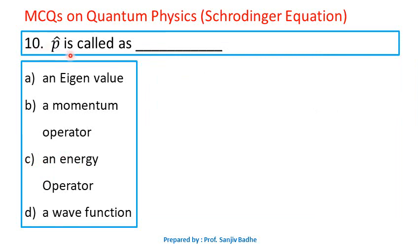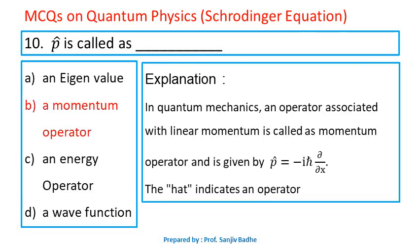Question number 10. P̂ is called — options are an eigenvalue, a momentum operator, an energy operator, or a wave function. In quantum mechanics, the operator associated with linear momentum is called the momentum operator, written as P̂ = −iℏ ∂/∂x. The hat symbol indicates an operator. In quantum mechanics, position, momentum, and energy can be expressed as operators. So P̂ is called a momentum operator.